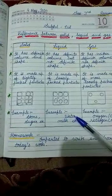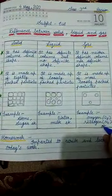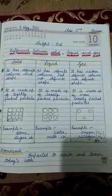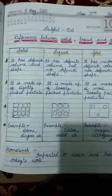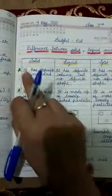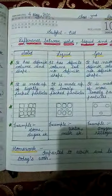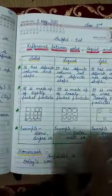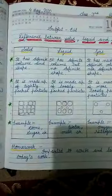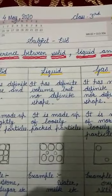Examples: solid — stone, sugar. Liquid — water, milk. Gas — oxygen, nitrogen. Now, what is volume? Volume tells us how much space any object covers — how much space it occupies. That is volume.